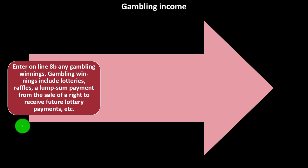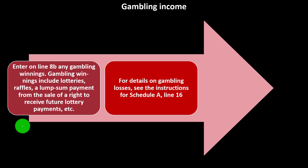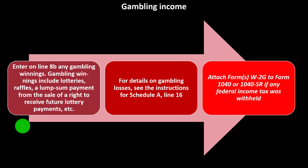People often ask about gambling losses, since frequent gamblers typically spend more than they win. You might be able to deduct gambling losses, but they would be Schedule A deductions, only applicable if you're itemizing rather than taking the standard deduction. Enter gambling winnings on line 8B — this includes lotteries, raffles, and lump-sum payments from the sale of a right to receive future lottery payments. For details on gambling losses, see Schedule A instructions, line 16.